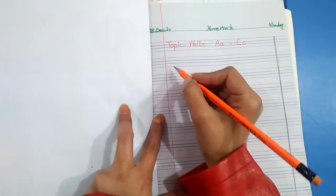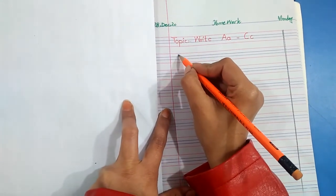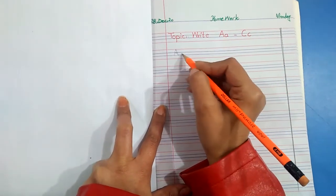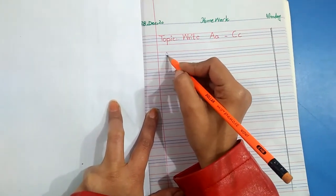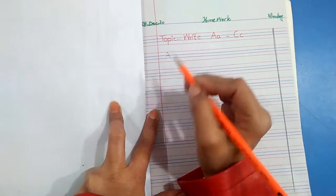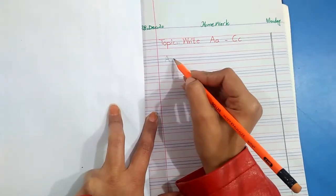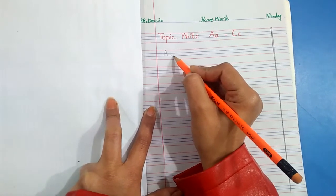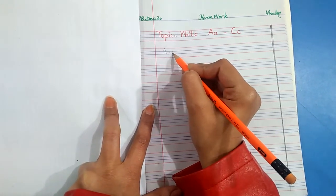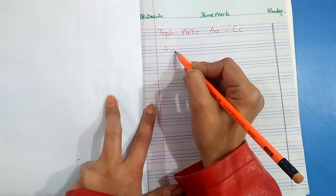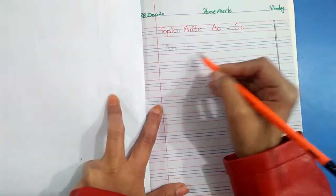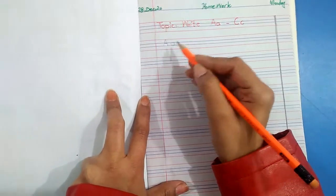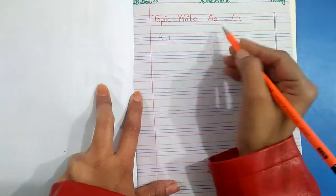We write letter A like this: right slant and left slant and one slanting line — those slants. Then we make a half curve and a standing line with a short slant like this. This is letter A — capital and small. Capital A, small a.